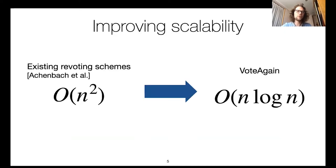Re-voting systems have a problem in that they scale very badly. To filter ballots and retain only the last vote of every voter, existing re-voting schemes induce a quadratic filtering complexity that privately compares every ballot with every other ballot. This is very slow and only scales to, let's say, large villages. VoteAgain, on the other hand, has a quasi-linear filtering phase that therefore scales to nation-scale elections.